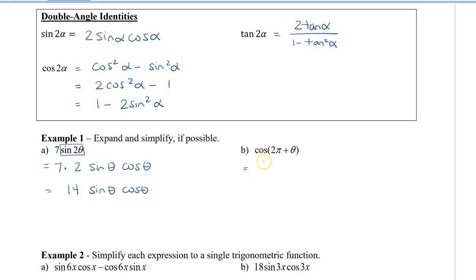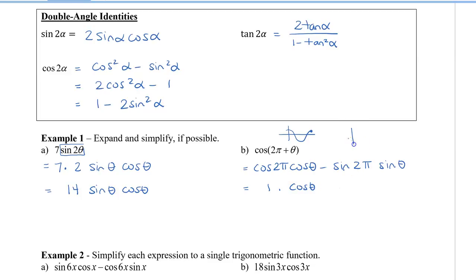For the next example, we have cos(2π + θ) and we use the cosine sum identity: cos 2π · cos θ − sin 2π · sin θ. From the graph, cos 2π = 1, so the first term is 1 · cos θ. And sin 2π = 0, so the second term is 0 · sin θ = 0. The whole second piece drops out, leaving just cos θ.